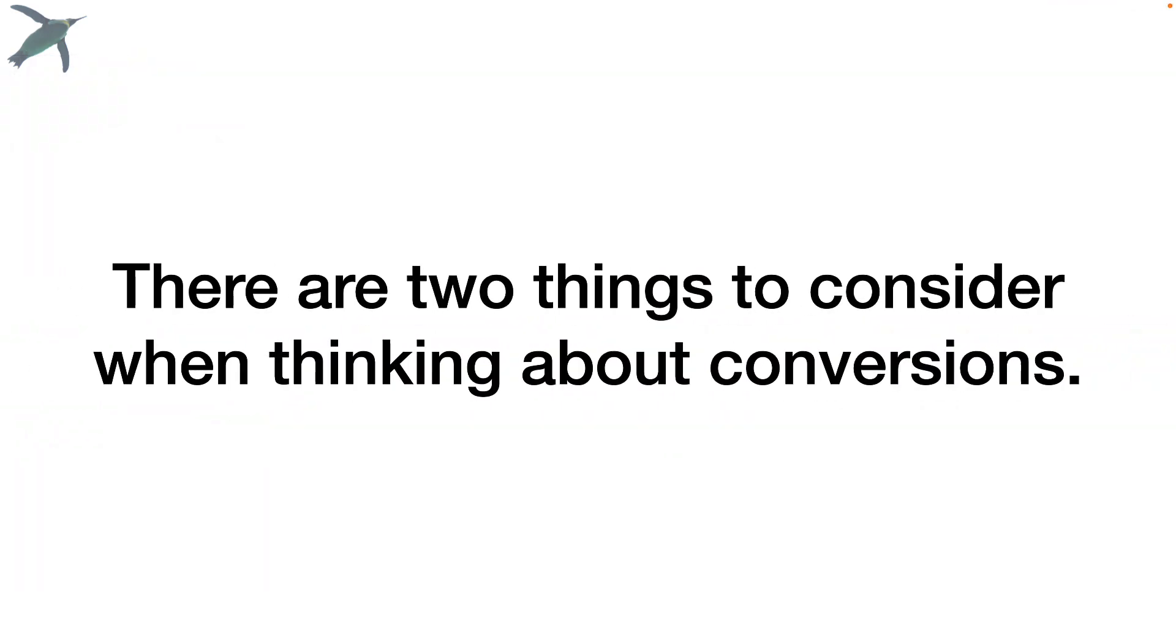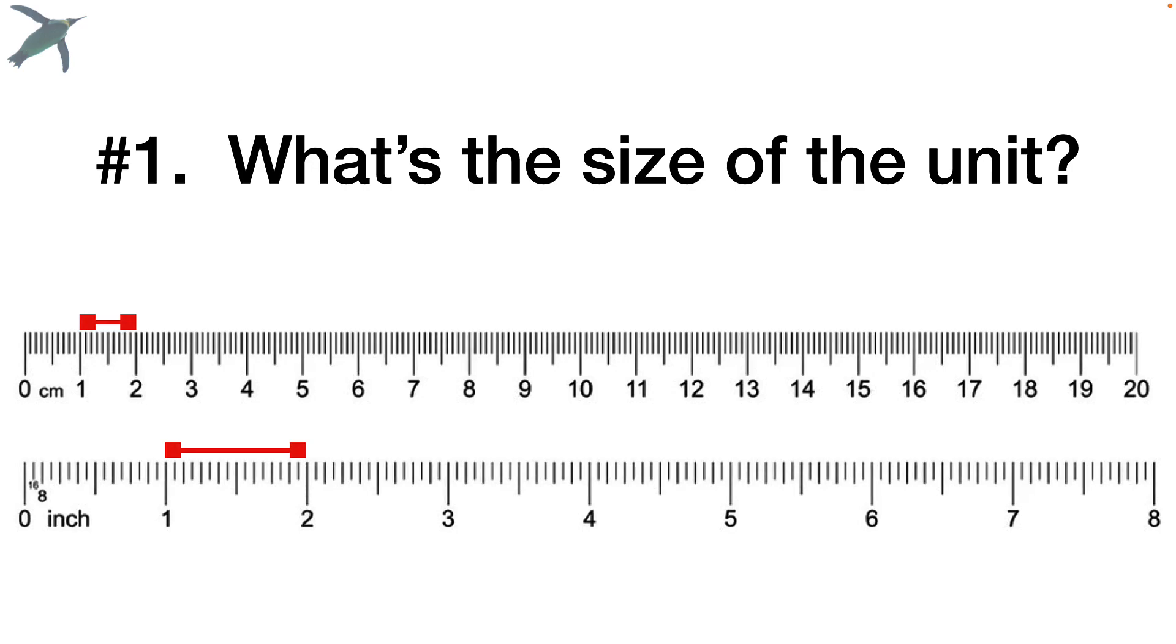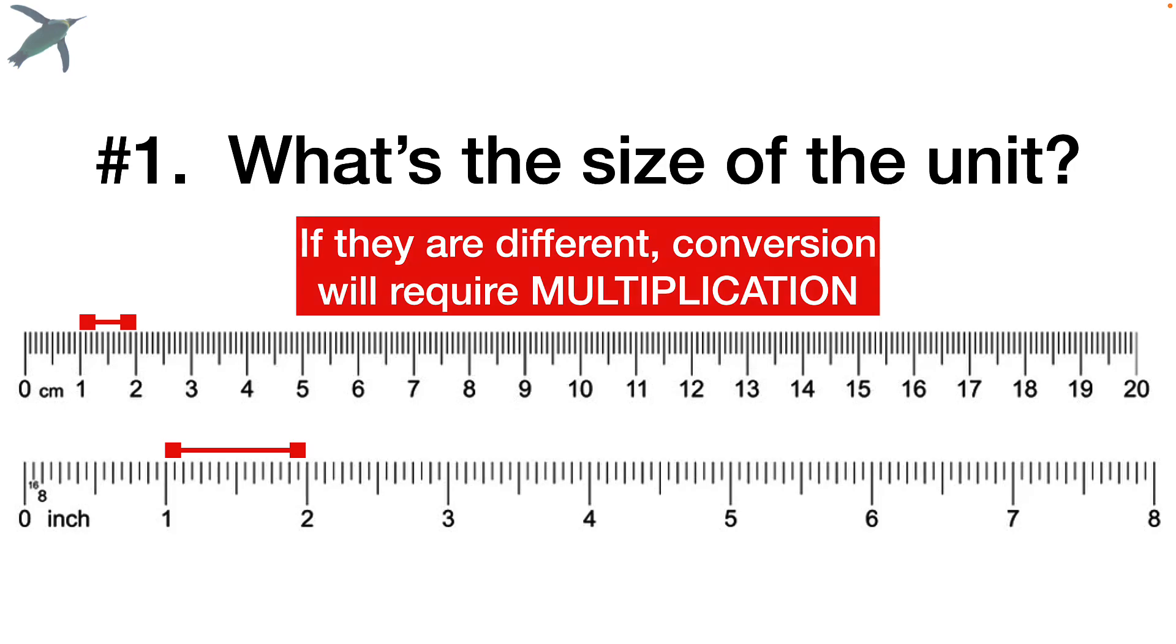Okay, so now hopefully you're getting the hang of this. There are two things to consider when thinking about conversions. Number one is what is the size of the unit? You can think about the size of the increment between one and two centimeters, for example, and one and two inches. You see how the size of those two things are different. So when they're different, that conversion will require multiplication.